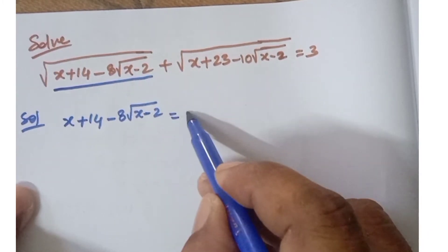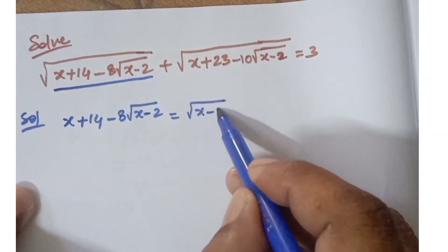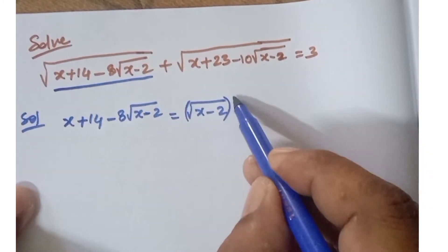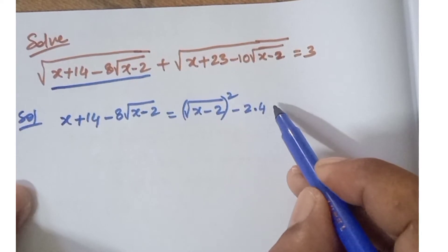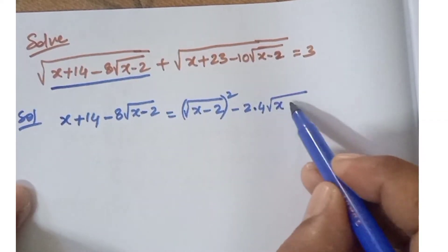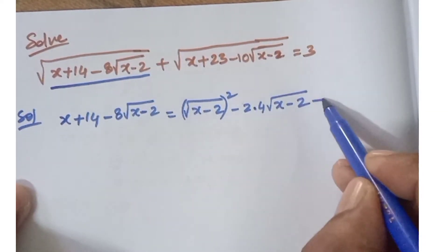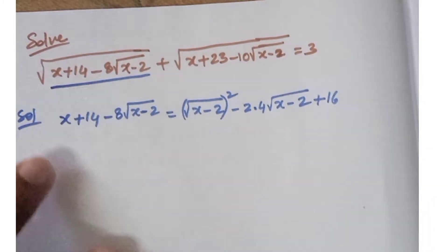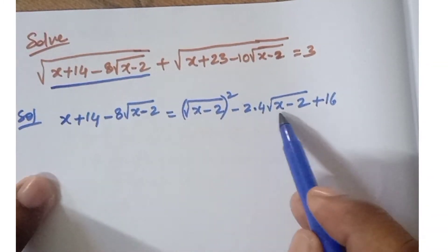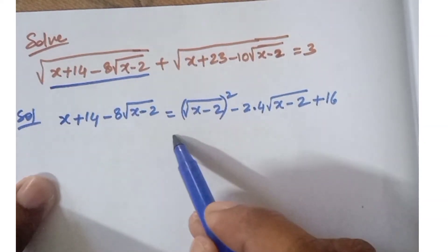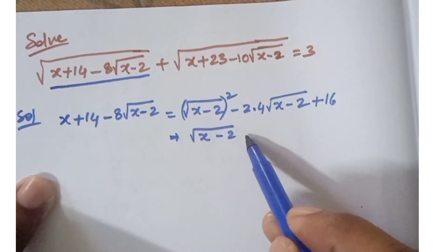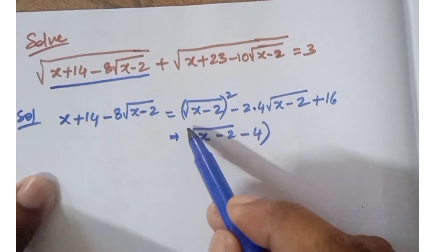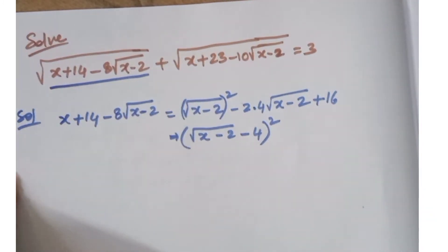This can be written as: root of x minus 2 whole square, minus 2 into 4 into root of x minus 2, plus 16. That gives us root of x minus 2 minus 4, whole square.